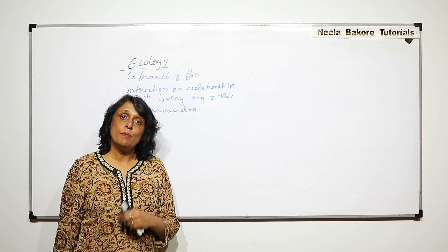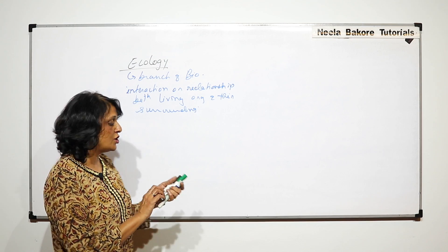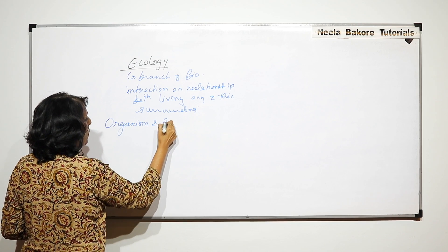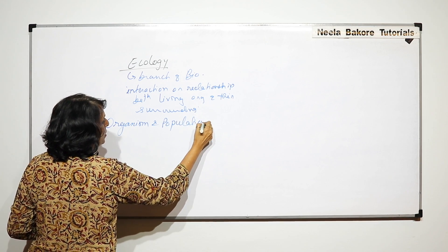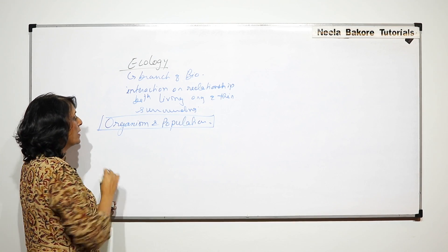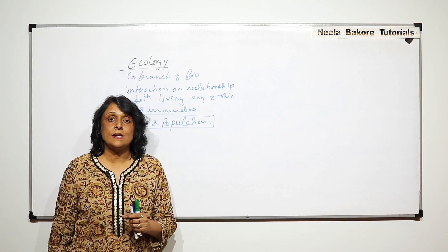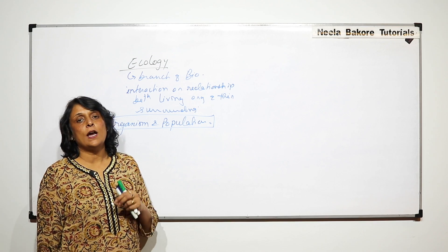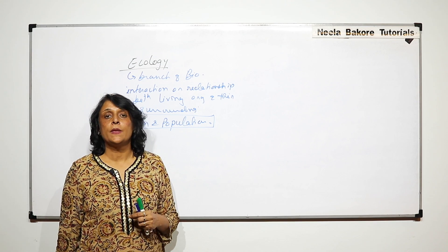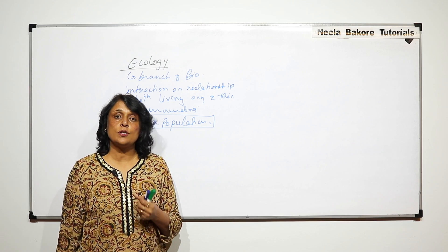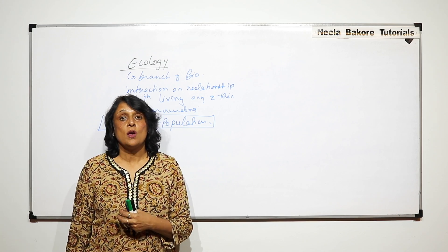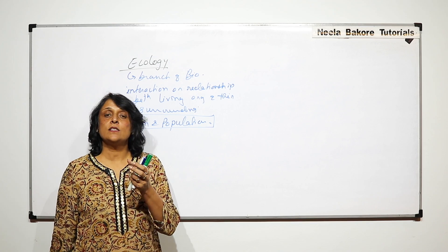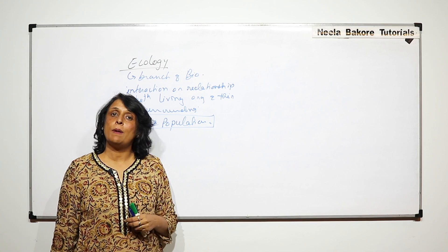The first chapter is Organism and Population. To understand what exactly we'll be talking about in this chapter, we need to understand the levels of organization. In certain chapters like the chapters of cell, tissues, and organ systems, we are talking about the lower levels of organization, and after organism is formed, we start talking about the higher levels of organization.